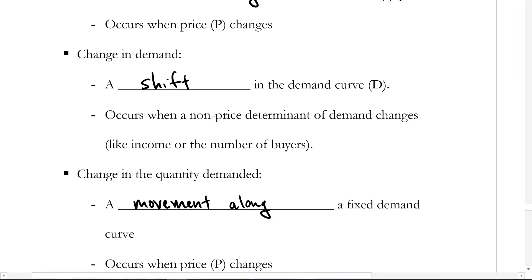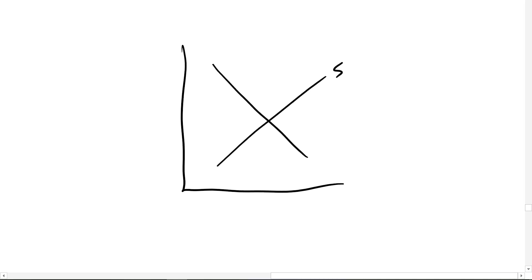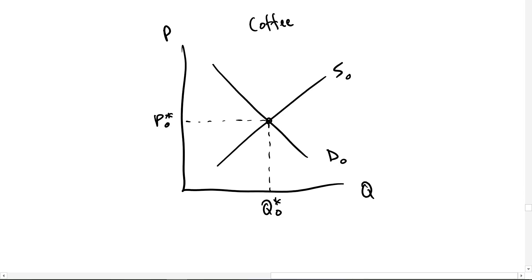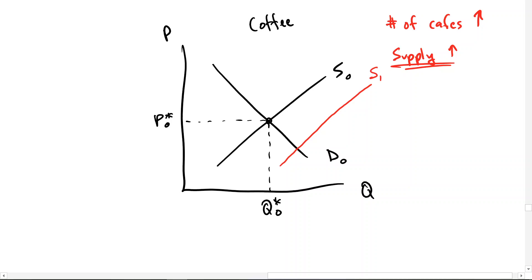Let me show you what I mean. If we take some market — supply, demand, price, quantity — and we have our equilibrium price and equilibrium quantity, let's say this is the market for coffee. Now let's say there's an increase in the number of cafes. That's going to be an increase in supply. If supply increases, that's a shift of the entire curve — in this case, a shift to the right. There's no increase in demand; it's just a shift in the supply curve.